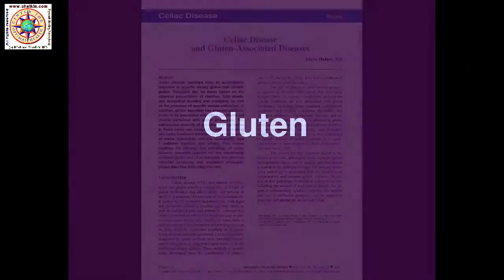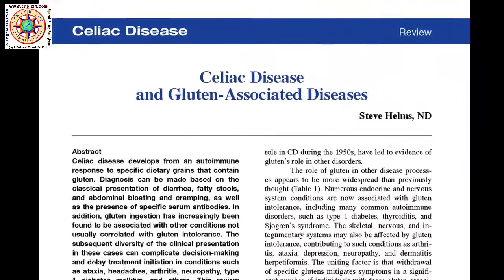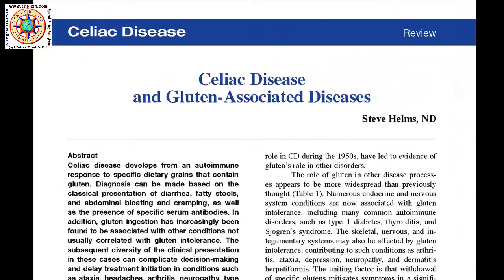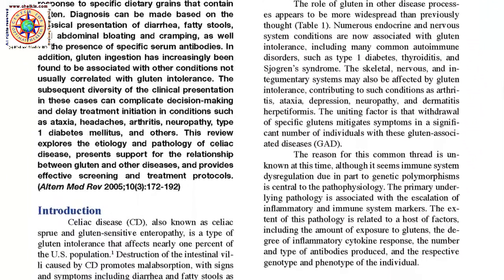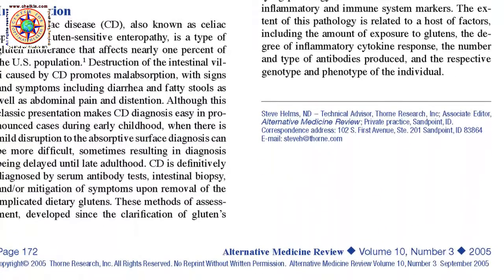In 2005, when this article by Dr. Helms came out in the Alternative Medicine Review, I was alerted to the confusion about gluten and celiac disease. Alternative Medicine Review was a high-quality alternative medicine journal published by the Thorne Company until just recently. Past issues and articles are readily available on the web.